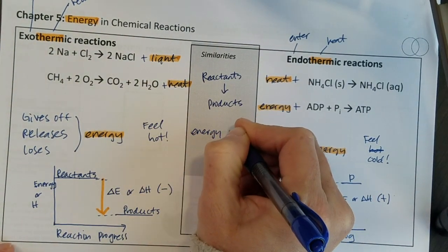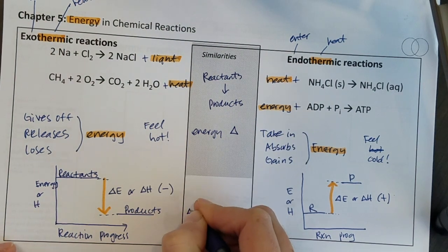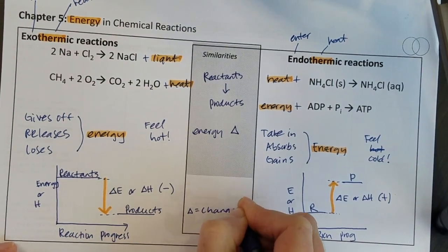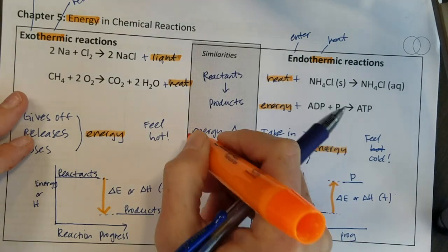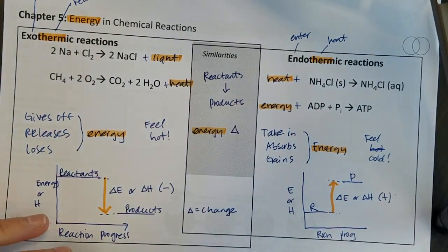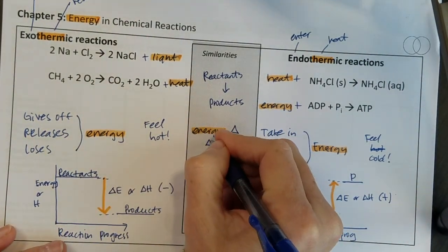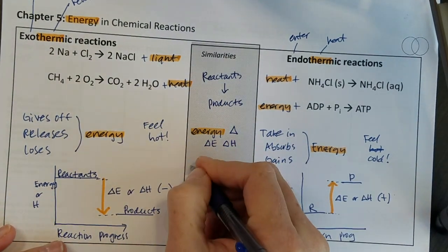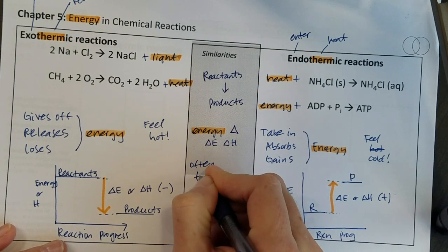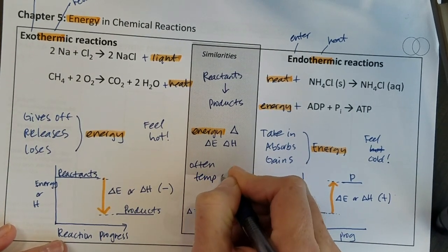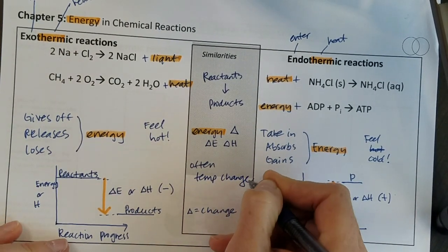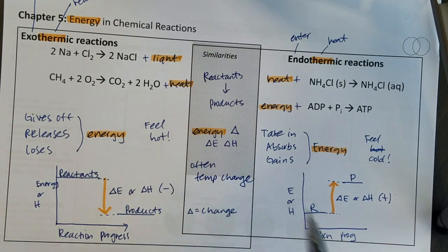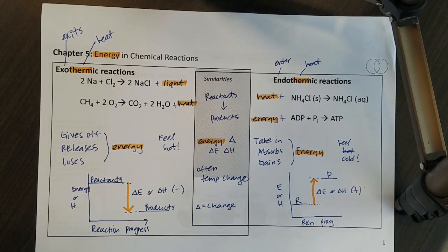On both of them we're looking at the energy change and this delta is just a symbol that means change so we're saying something about the energy changed and we saw that written as delta E or delta H and often in these reactions we can measure some kind of temperature change and that's just one form of energy.